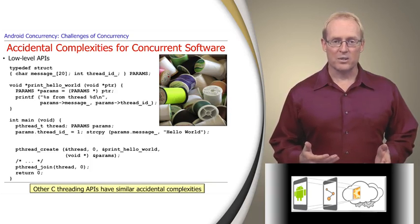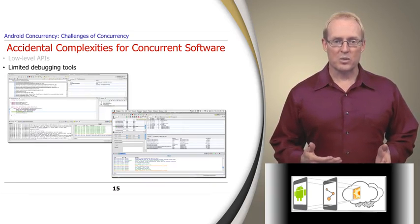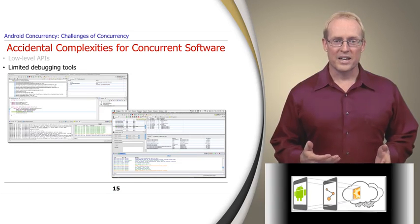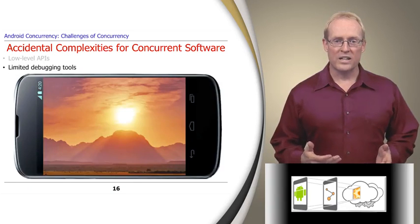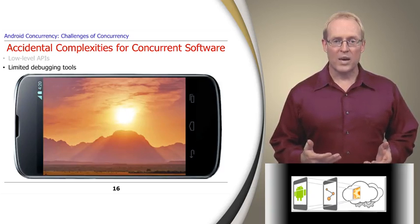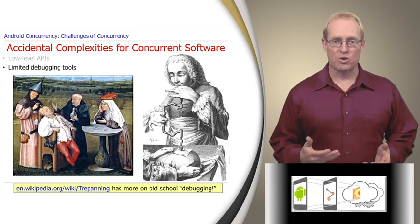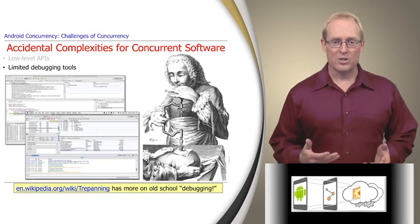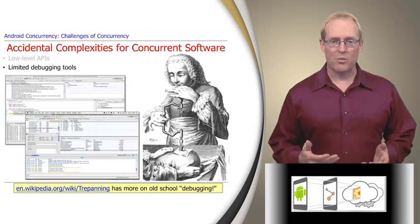Some other accidental complexities associated with concurrency stem from limitations with our debugging environments and tools. A well-written and properly functioning concurrent program is a thing of beauty, but what happens when something goes wrong? What tools enable you to drill down, look inside of your software to figure out what's happening, and then take the appropriate remedial action?